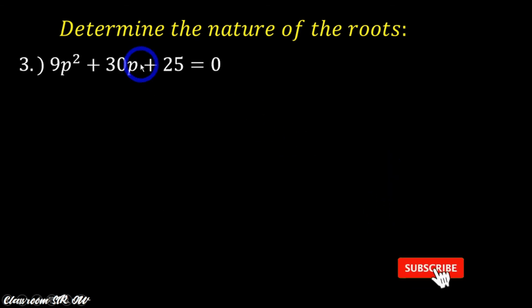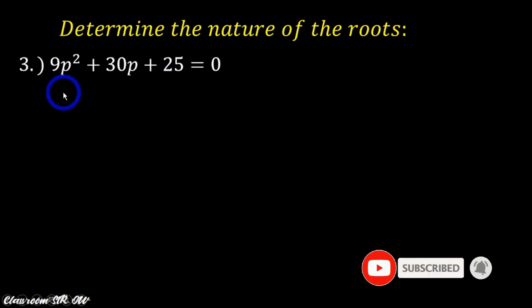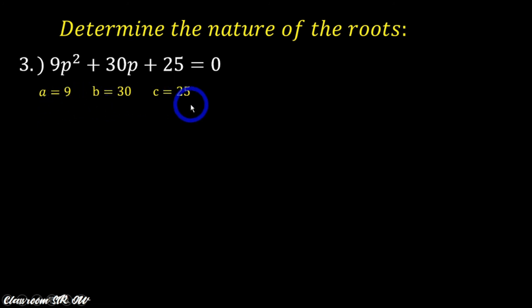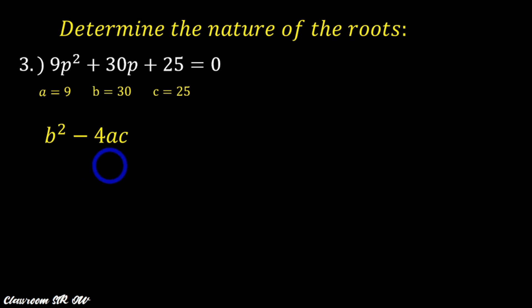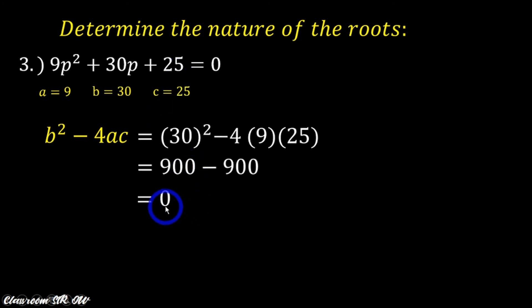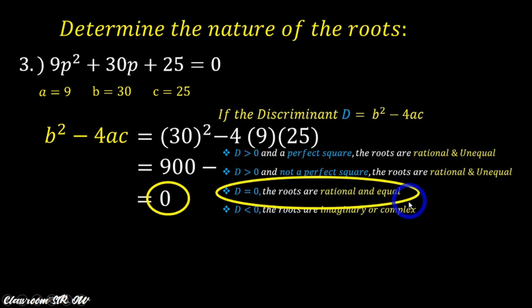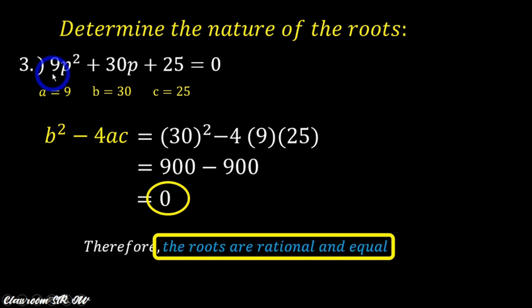Example number 3: Determine the nature of the roots of 9p squared plus 30p plus 25 equals 0. The values of a is 9, b is 30, and c is 25. Using our discriminant b squared minus 4ac and replacing a, b, and c with the identified values and simplifying them, the discriminant is 0. From our summary, if the discriminant is equal to 0, then the roots are rational and equal. Therefore, the roots of this quadratic equation are rational and equal.